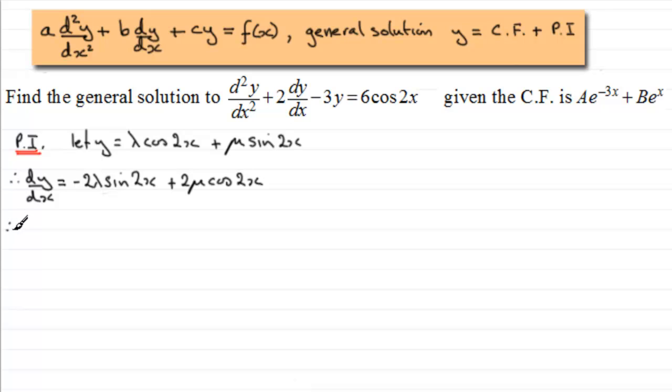Now we need the second differential, d²y/dx². So differentiating the first term here is going to give us minus 4 lambda cos2x.